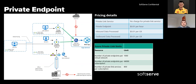The private link resource can be deployed in a different region than the virtual network and private endpoint. Multiple private endpoints can be created using the same private link resource. However, the recommended practice is to use a single private endpoint for a given private link resource to avoid duplicate entries or conflicts in DNS resolution. Multiple private endpoints can also be created on the same or different subnets within the same virtual network. Limits include 1000 private endpoints per vNet, 64,000 per subscription, and 800 private link services per subscription.